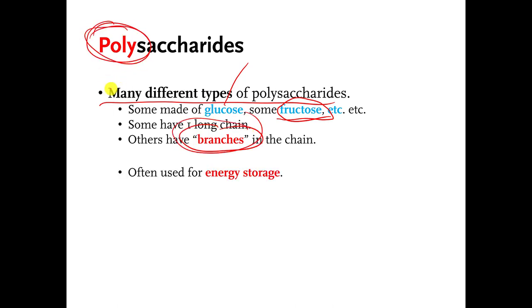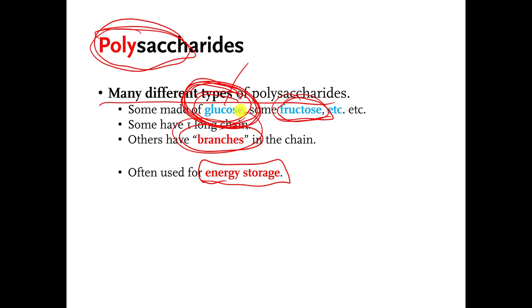For the most part, the job of polysaccharides is to store energy. In other words, you can get energy from sugar molecules like glucose and fructose, but if you don't need the energy from them but you've eaten a lot of sugar, one of the things that your body can do is just connect them to each other, make a polysaccharide, and save that. Just save it as stored energy that might be able to be used later.